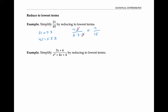If we want to reduce a rational expression with variables in it to lowest terms, we proceed the same way. First, we'll factor the numerator — that's three times x plus two — and then factor the denominator. In this case, it factors to x plus two times x plus two, which we could also write as x plus two squared. Now we cancel the common factors, and we're left with three over x plus two, which is definitely a simpler way of writing that rational expression.